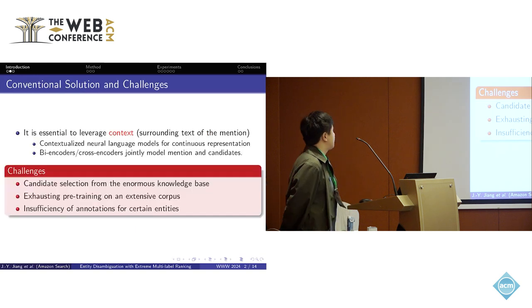There are several conventional solutions, and it's very essential for those to leverage the context, which is the surrounding text of the mention. The conventional approach uses contextualized neural language models for continuous representation so that we can embed that into a vector space. Some works use bi-encoders or cross-encoders to jointly model the mention and the candidate.